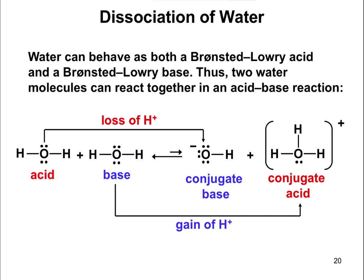Just as a reminder, we talked about water and how it can act as both an acid and a base, so it's amphoteric. Two water molecules can come together, one acting as an acid and the other as a base. The acid is going to be a proton donor, giving up its proton, and the base is going to be a proton acceptor. So when two waters come together, we form a hydroxide ion (OH⁻) and a hydronium ion (H₃O⁺).